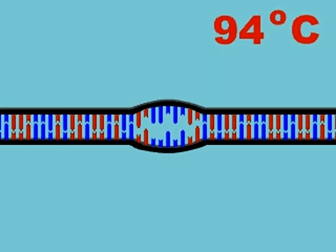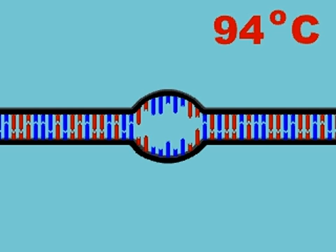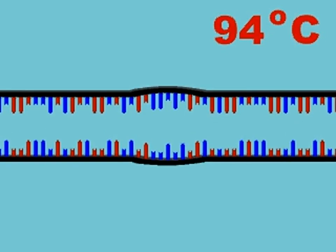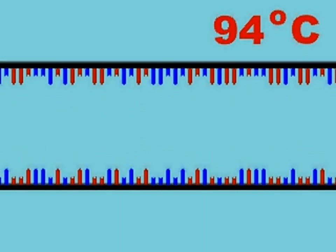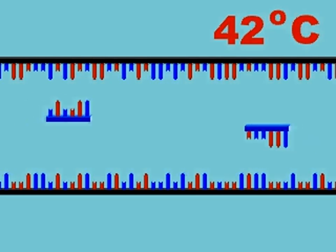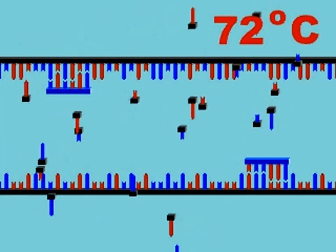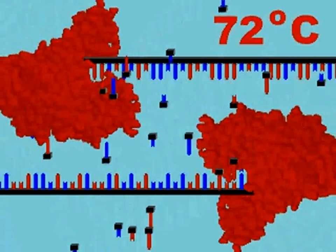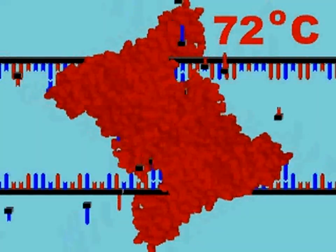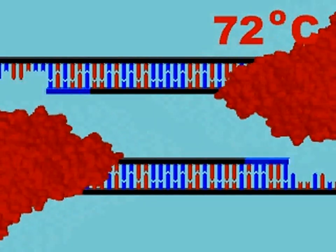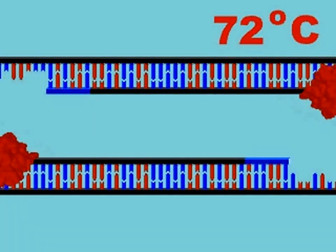The first step in the reaction involves denaturation of the genomic DNA by heating to 94 degrees centigrade. The reaction is then cooled to 42 degrees centigrade, allowing the primers to hybridize to the complementary sequences in the genomic DNA. The temperature is then increased to 72 degrees centigrade, the optimal temperature for TAC polymerase to synthesize DNA. This completes the first cycle, and the process is then repeated.